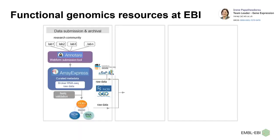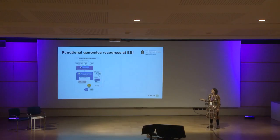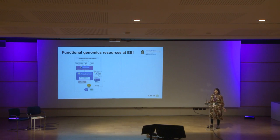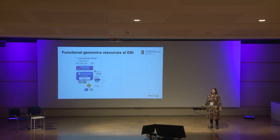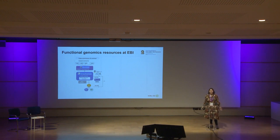We are the Functional Gene Expression Team, led by Irene Papathiodoro, and we manage and host different resources. The first side of our resources is the data submission and archival side, where data comes in from the community through our web submission tool called ANATER. Data that comes in gets archived in the ArrayExpress collection in BioStudies — the functional genomics-specific section of a wider archive — and the raw sequencing data then gets handed over to the European Nucleotide Archive for long-term secure storage as part of the INSDC. The data is spread as widely as possible and is mirrored through all of those partners.